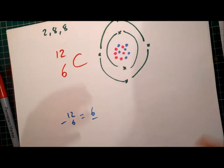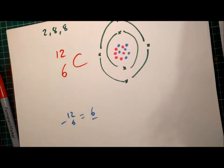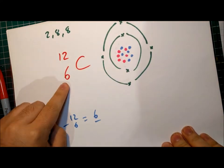And that's how you read, that's how you give the identity of an atom with just 2 numbers: the atomic mass and the atomic number.